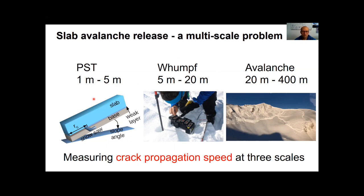For that, more experimental evidence is needed. On the 15th of January 2019, we were lucky to collect a dataset which allows us to compute speeds at all relevant scales, and so allows for the direct comparison of the measured speeds. First, we conducted a PST which was 5.5 meters long, then we measured the speed in a WUMPH at a scale up to 20 meters, before we analyzed a video of an avalanche which was very large and showed crack propagation of hundreds of meters.